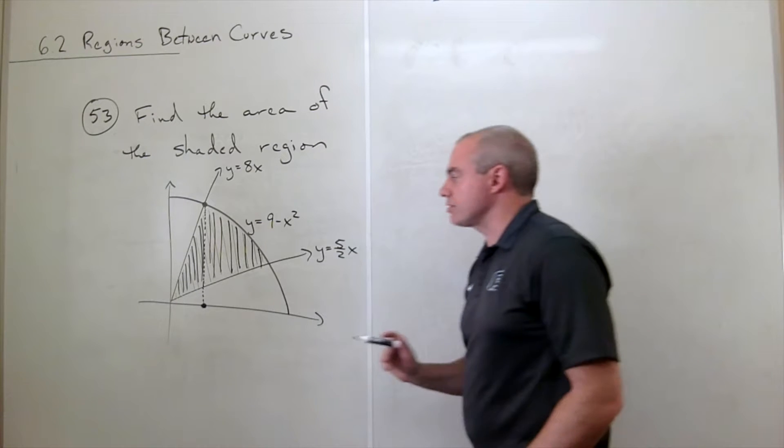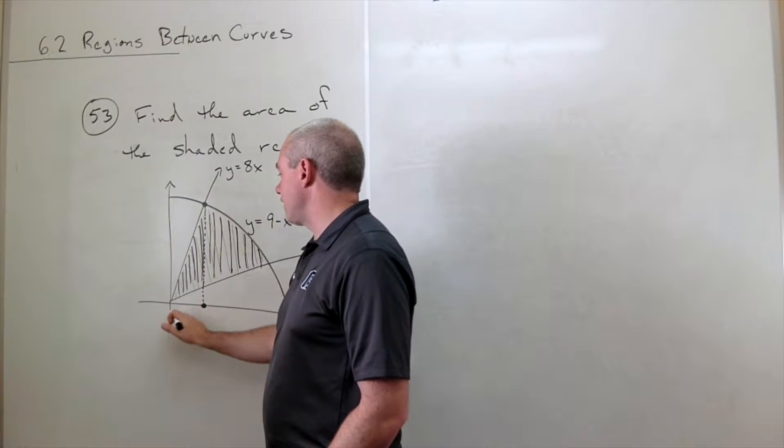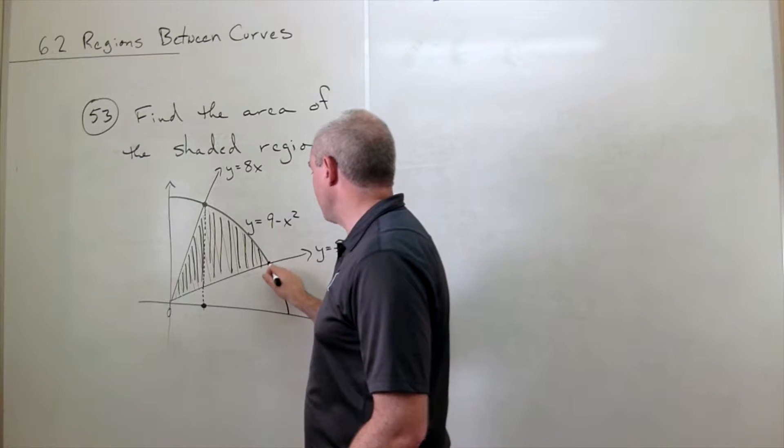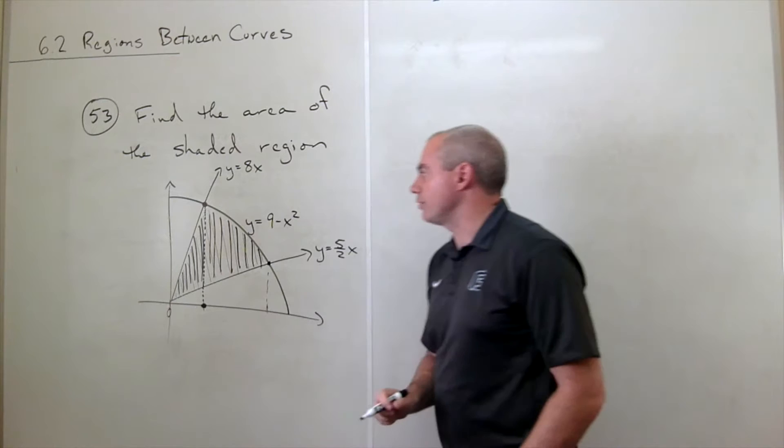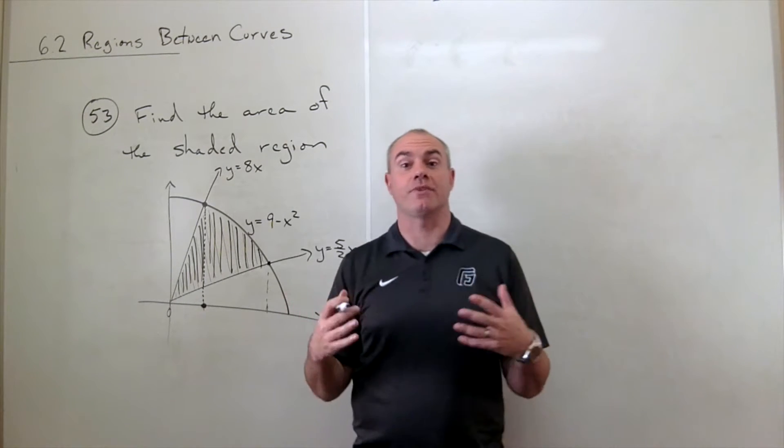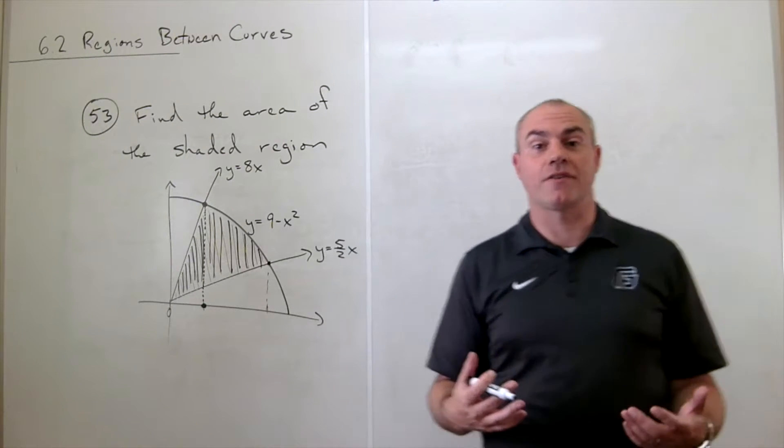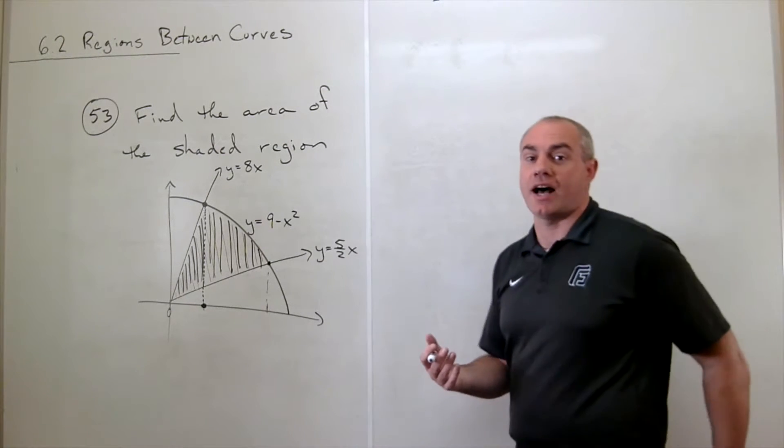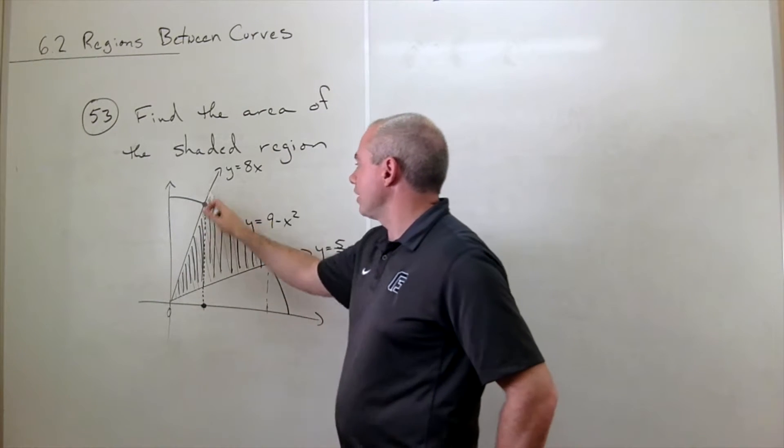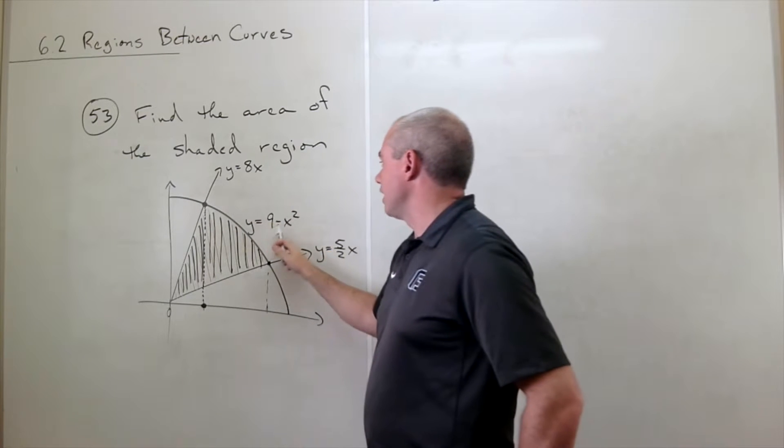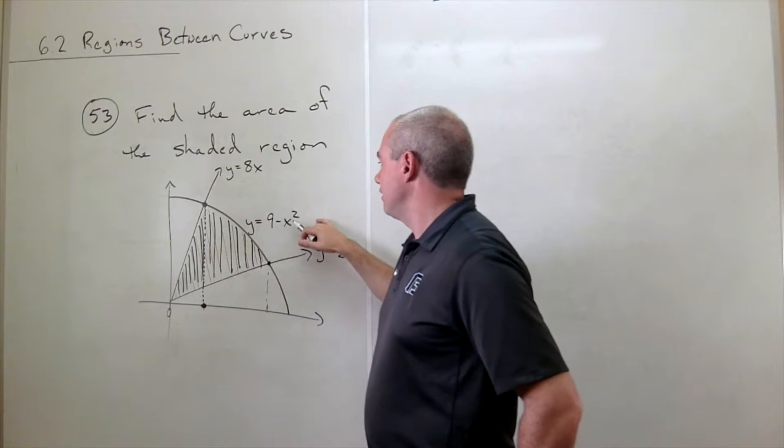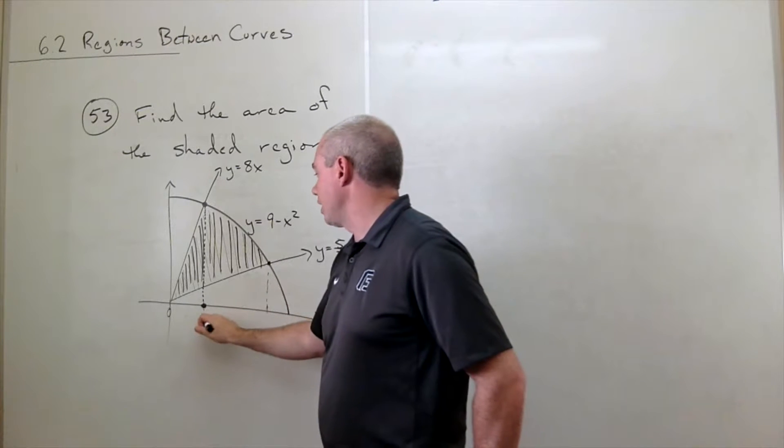Now, before we do anything else, it's fairly clear that this x value is 0. But what is this x value? I could set things equal to each other and solve for x, or I could just eyeball it. If I want to figure out where this parabola intersects this line, where is 8x equal to 9 minus x squared? If I plug in 1 to both of these things, I get 8 and 8. So 1 is going to get the job done.